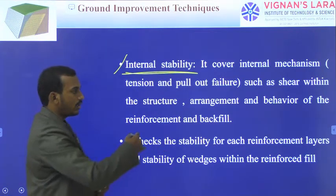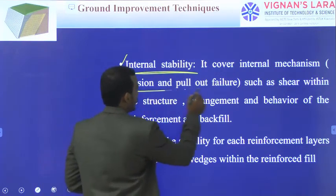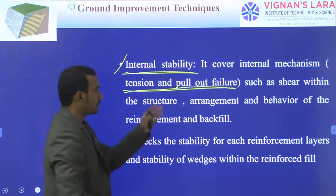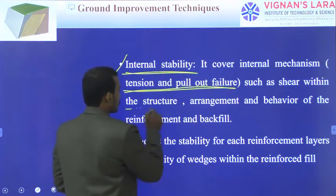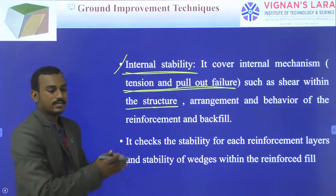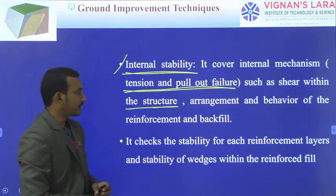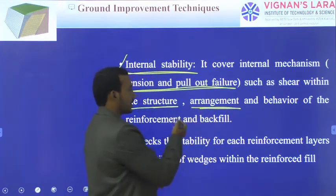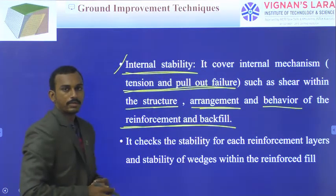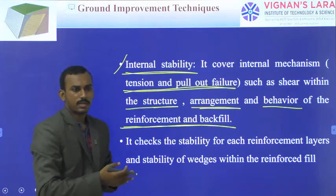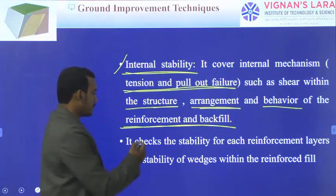Internal stability covers the mechanisms for the retaining wall, reinforcing element, and soil. Internal stability covers mechanisms such as tension failure and pullout failure of the reinforcing elements, and shear within the structure. If the backfill cannot behave properly, there is no development of friction. That is why it is very important.